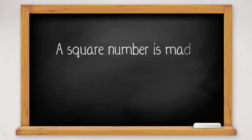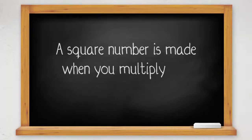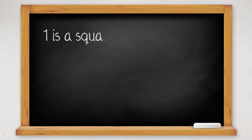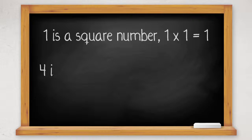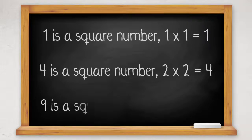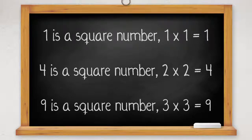A square number is made when you multiply any whole number by itself. 1 is a square number because 1 times 1 equals 1. 4 is a square number because 2 times 2 equals 4. 9 is a square number because 3 times 3 equals 9.